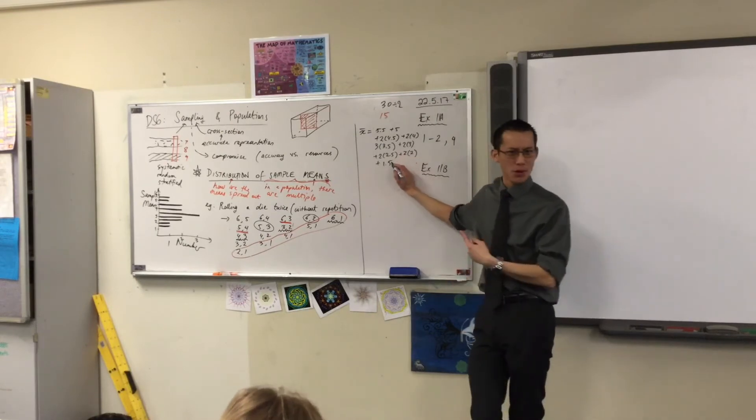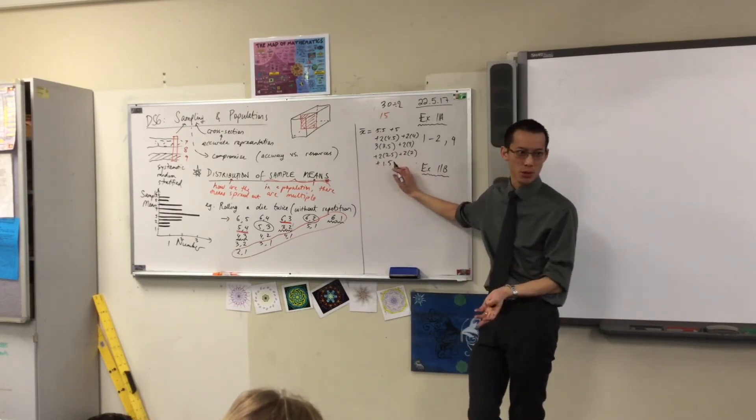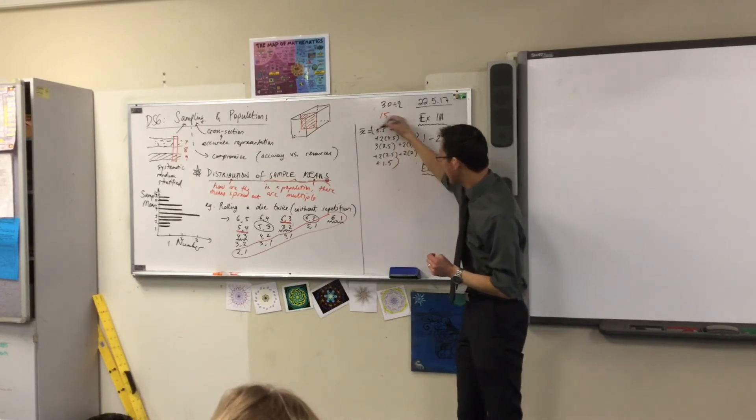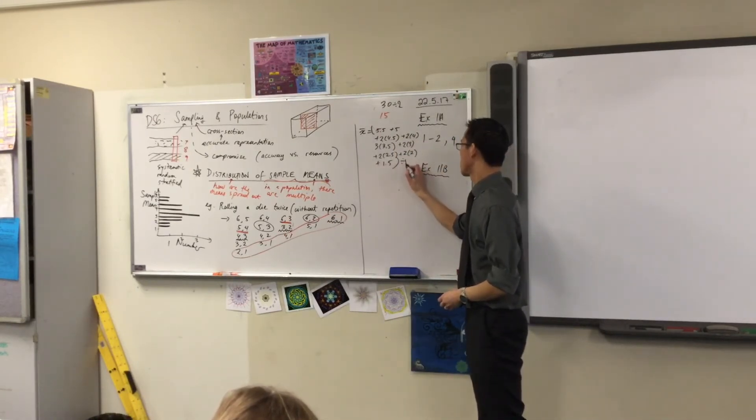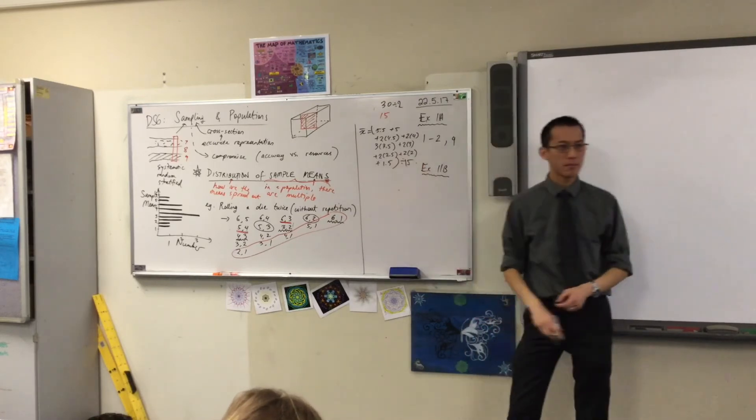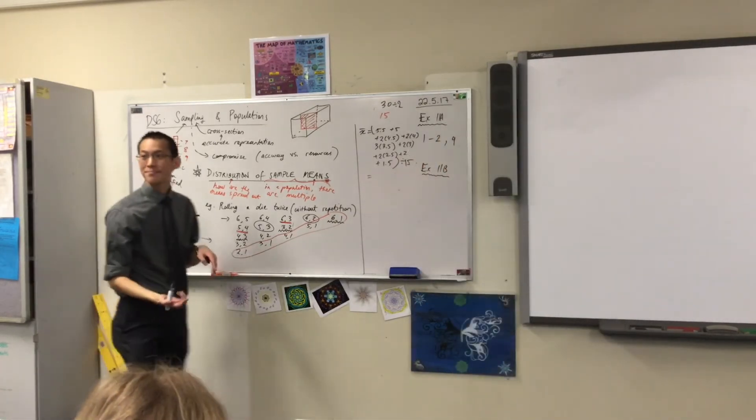Now I've added up all 15 by the time I hit equals on the calculator there. But I want not the sum of all those, I want the average, the mean of all those. So what am I going to do? Don't forget, it's the whole thing, the sum, right? There you go. So go ahead. 3.5.